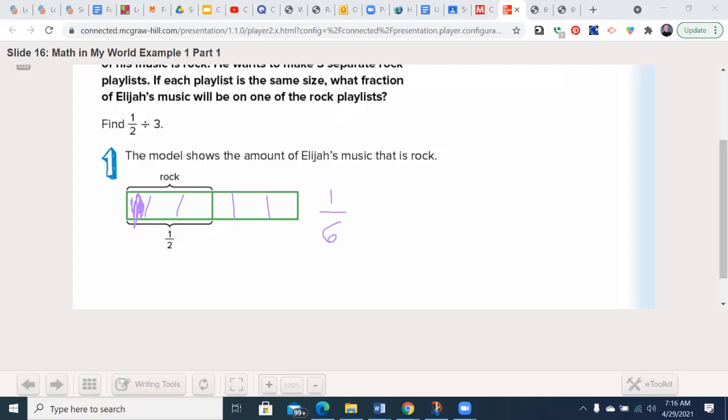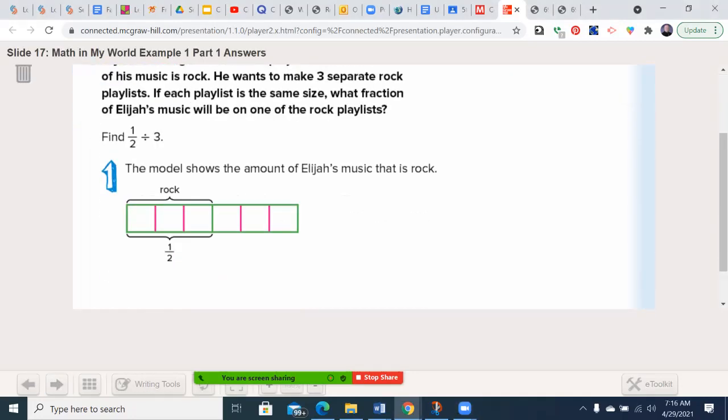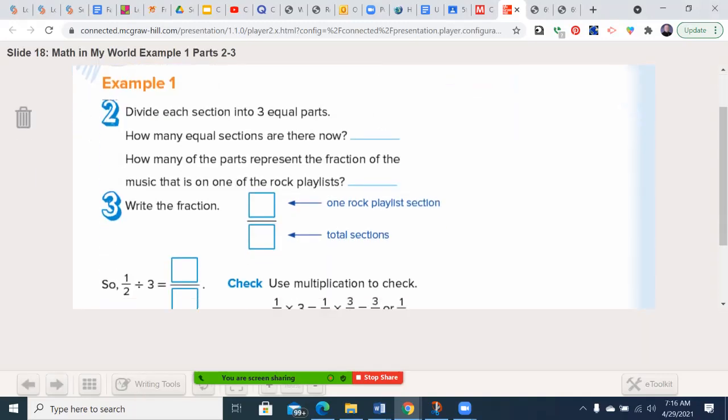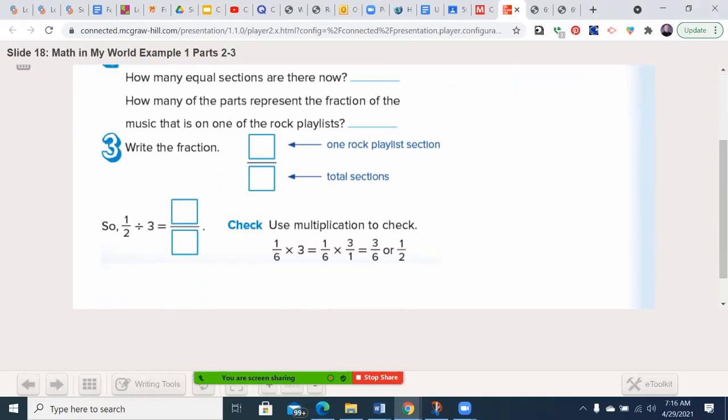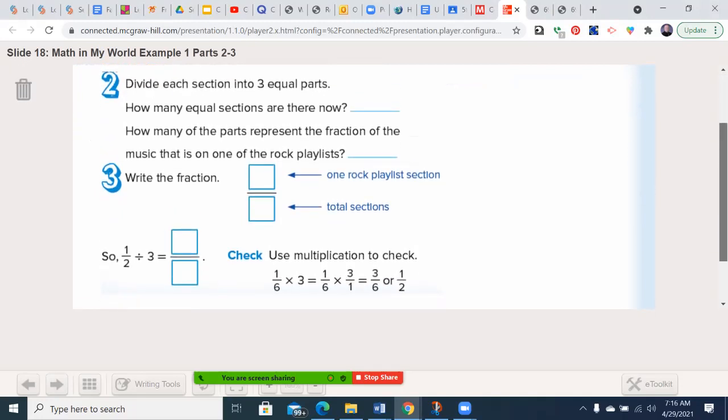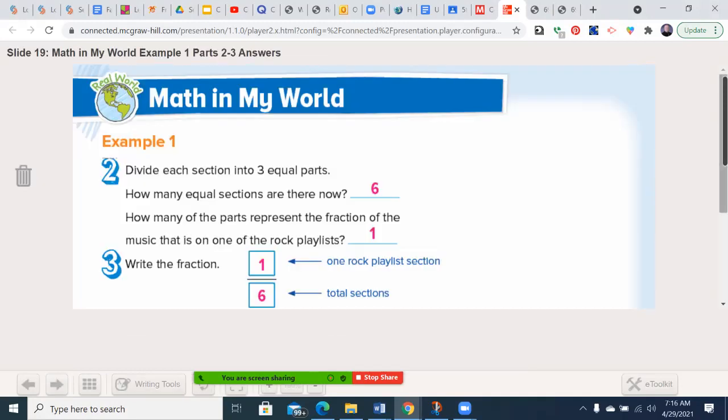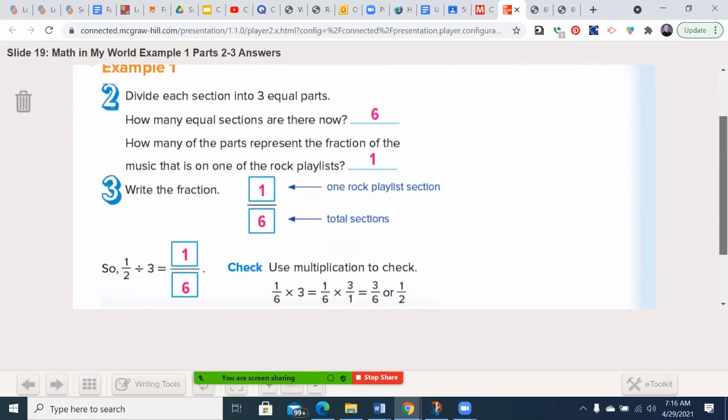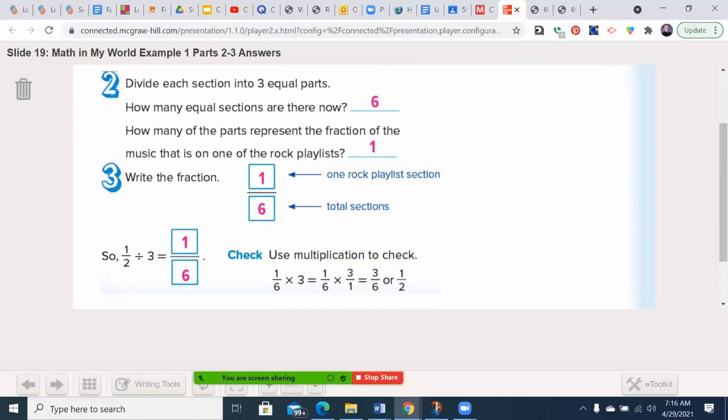So 1/6 of his music is going to be in that stretch. But I kind of jumped ahead, so I'm going to clear it and give you a chance to write it where you're supposed to. Make sure you put the two lines in on each. So there were six sections now, and the rock one on any particular playlist was one. So that's 1/6. So 1/2 divided by 3 is 1/6.